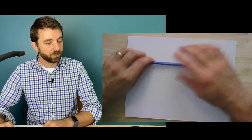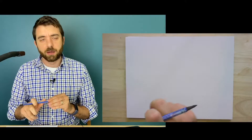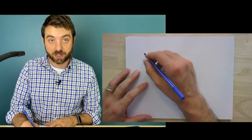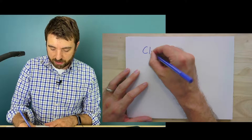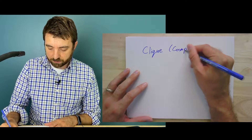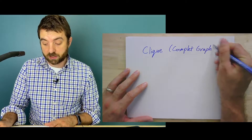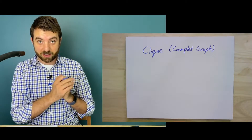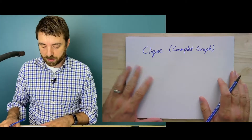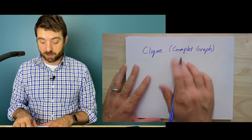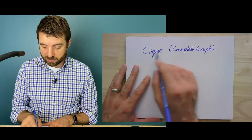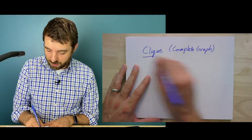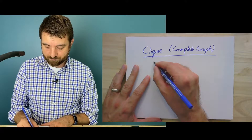A very common graph that you'll encounter is the so-called clique, also known as a complete graph. It is pronounced 'clique' — don't say 'click,' even though you might talk about a group of people who are all friends with each other as a clique. In graph theory we say 'clique.' This is a graph that contains all possible edges — that's the sense in which it's complete.